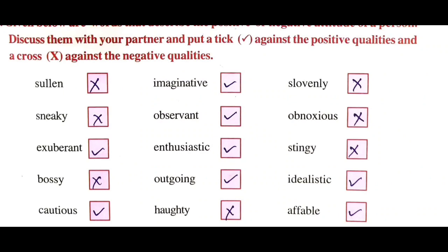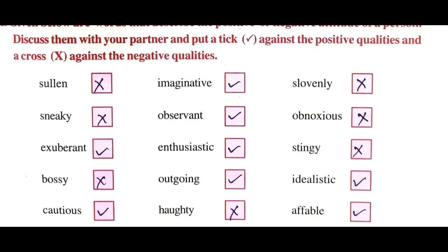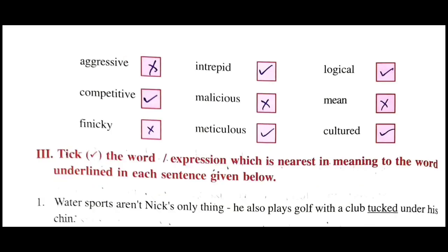Next: 'stingy' means ungenerous, lacking kindness - this is a negative quality, put the cross mark. Next: 'bossy' means trying to exercise authority over others - this is a negative quality, cross mark. Next: 'outgoing' means friendly nature - this is a positive quality, give the tick mark. Next: 'idealistic' means being principled and ideal - this is also a positive quality, give the tick mark. Next: 'cautious' means being careful - this is also a positive quality, give the tick mark. Next: 'haughty' means arrogance - this is a negative quality, put the cross mark. Next: 'affable' means good-natured or friendly - this is a positive quality, tick mark. Next: 'aggressive' means ready to attack, combative nature - this is a negative quality, cross mark. Next: 'intrepid' means fearlessness, not being afraid - this is a positive quality, tick mark.